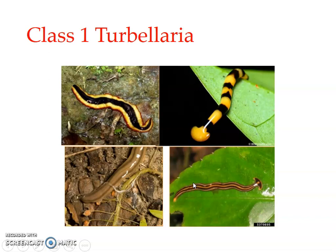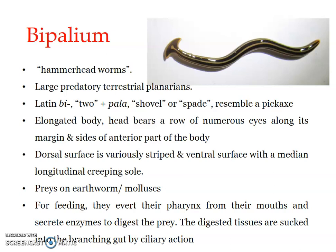When we speak about Bipallium — the example to be studied in detail — it is a genus that includes terrestrial planarians. They are generally termed hammer-headed worms. The term Bipallium comes from two Latin words: 'bi' meaning two, and 'palla' meaning shovel or spade. It resembles a pickaxe, like a Y-shaped structure in a typical pickaxe, which is why the name Bipallium was given.